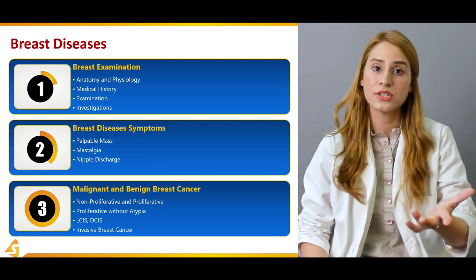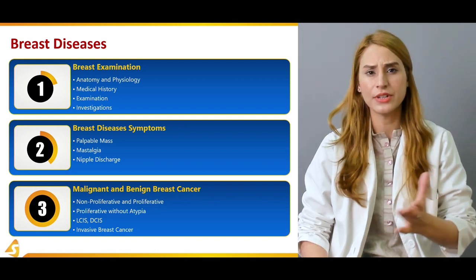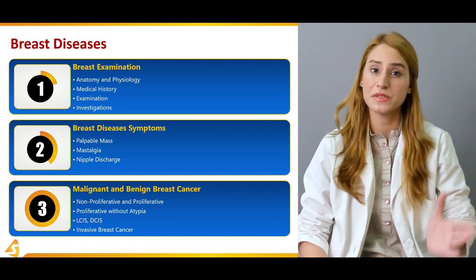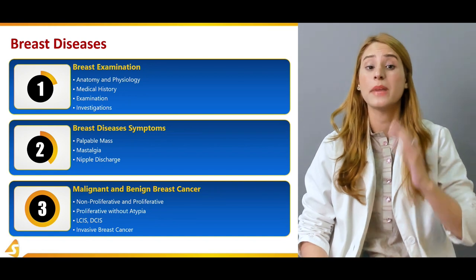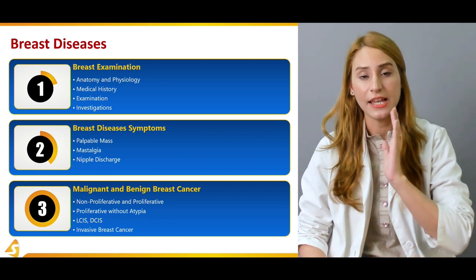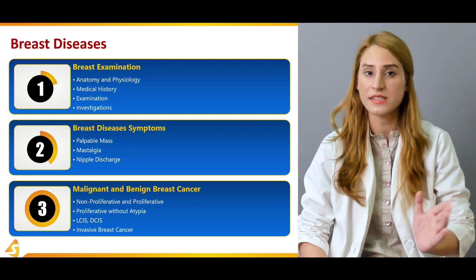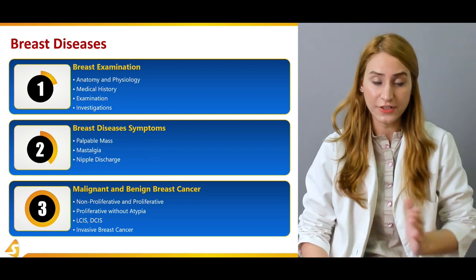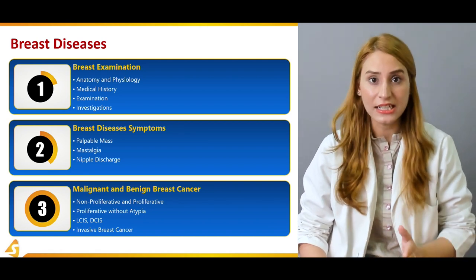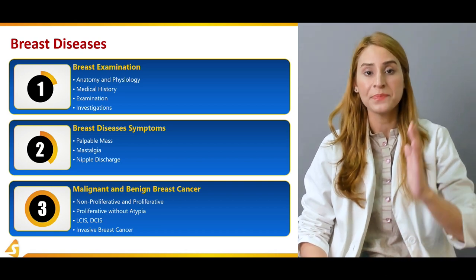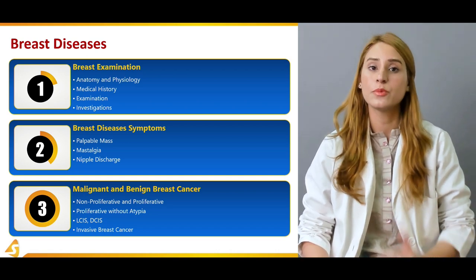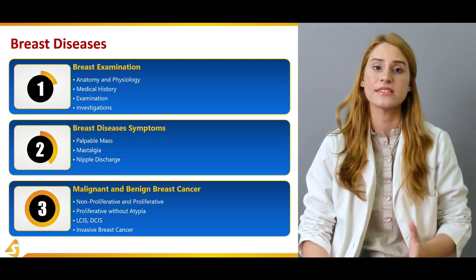Talking about section one regarding breast examination, we're going to discuss a little bit about the anatomy, physiology, and composition of the breast tissue. Then we're going to talk about the medical history — how a patient is presenting to you, what you need to ask regarding the symptoms, the onset, the severity, the duration, and associated features. Then we're going to talk about the clinical examination — what you look for during inspection and palpation — and finally about investigation. That was all about section one.